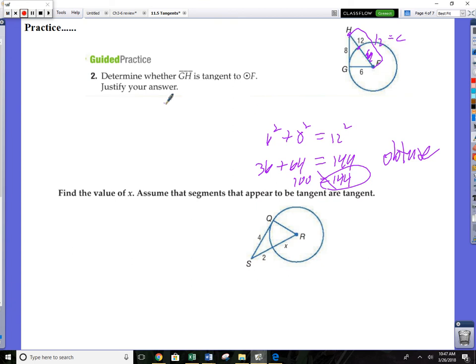Now this one is level 10 hard. Find the value of x. Assume that the segments that appear to be tangent are tangent. So this is our tangent right here, so that does make a 90. This portion is x, this portion is also x. So this is going to be my c, and I don't know how long c is: c is 2 here and x here. So my a is going to be 4 squared, my b is going to be x squared, and my c is just going to be 2 add x squared.